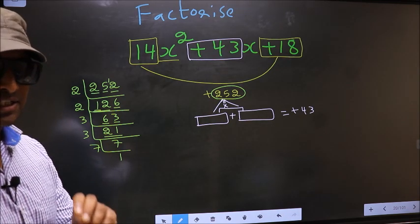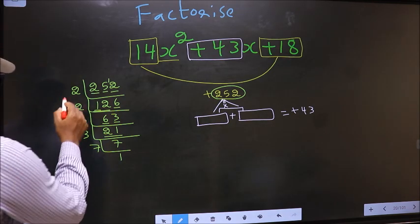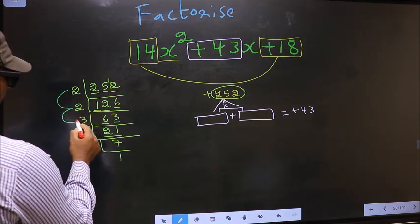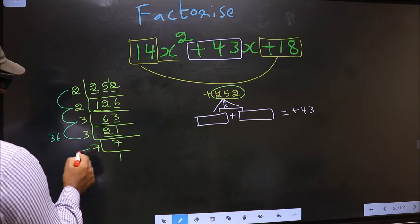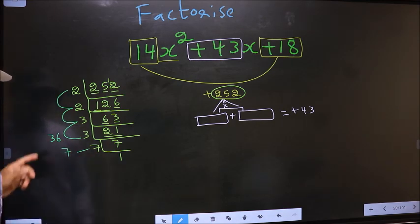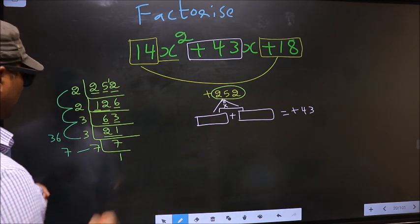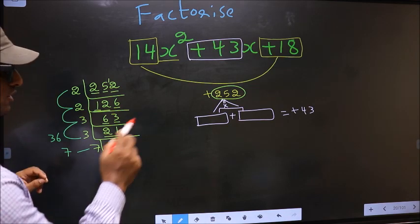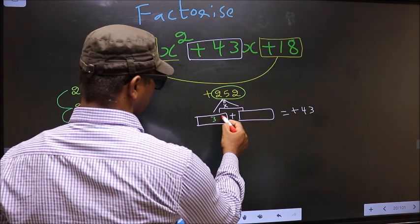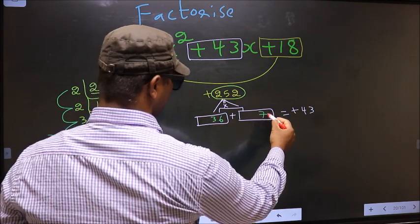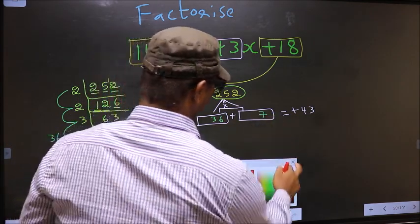Now, the 2 numbers should be 2 × 2, 4 × 3, 12 × 3, 36. And the second number is 7. 36 plus 7 is 43, 36 × 7 is 252. So, here we write 36 and 7 here.